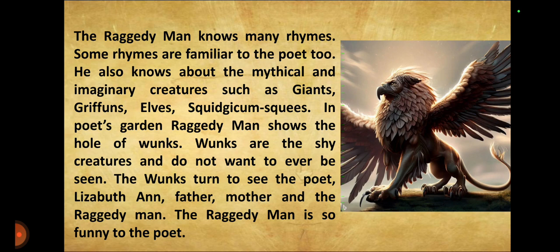Vans are shy creatures and don't want to ever be seen. The Raggedy man had shown the hole where vans actually lived. It was seen by Elizabeth Ann, the father, the mother, and the Raggedy man. The speaker notes this may be imagination or his point of view, and admits uncertainty about what exactly that stanza means.